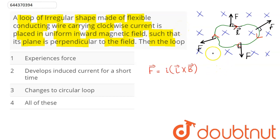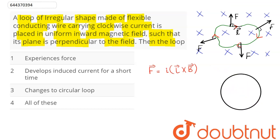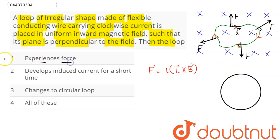The radially outward force stretches the loop so that it occupies maximum area, and the loop changes to a circular loop. As we know, a circular loop has the maximum area. So the force stretches this loop and forms a perfect circular loop. We can see that the first option — that it experiences a force — is correct.